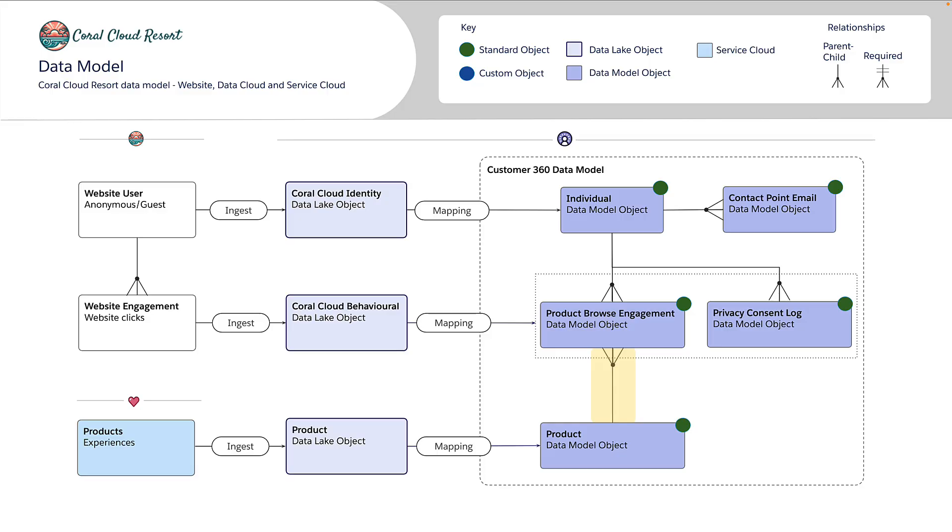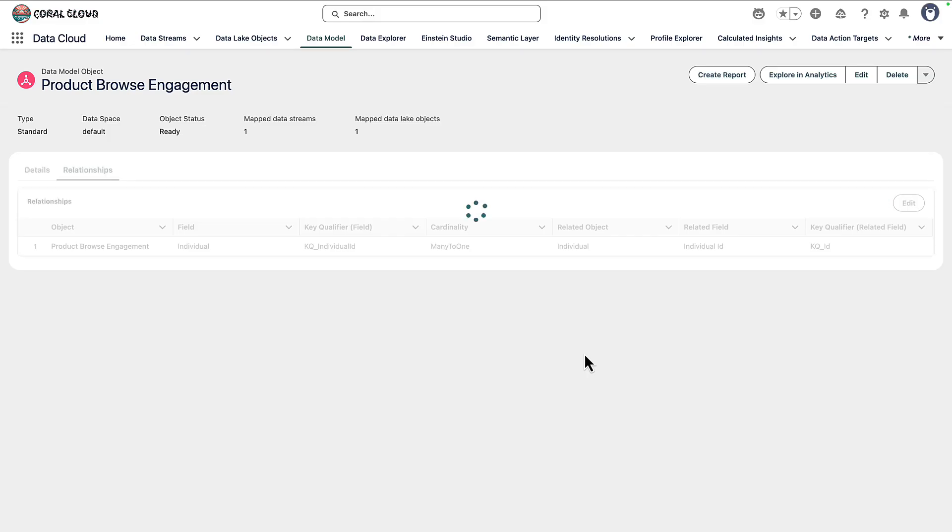That's it for this video. We've made a great start at addressing Coral Cloud Resort's goal of tracking website engagement. We set up the website connector, looked at the associated data streams, and mapped those to the standard Customer 360 Data Model. In the next video, we'll look at how to use an SDK to start sending events into Data Cloud. If you liked this video, give it a thumbs up and check out other videos on the Salesforce Developer YouTube channel.